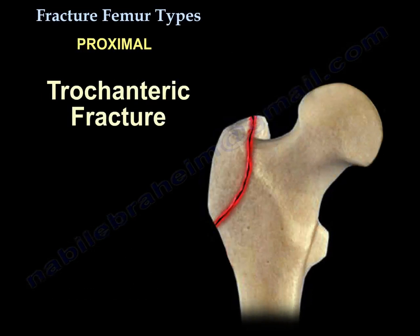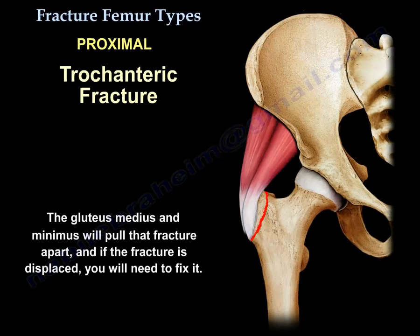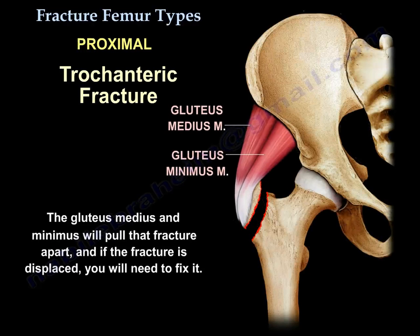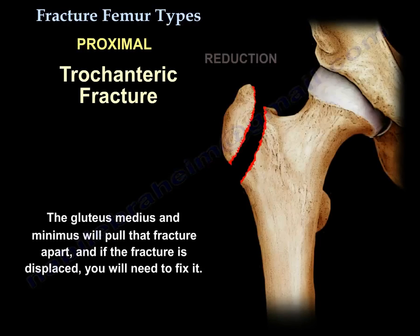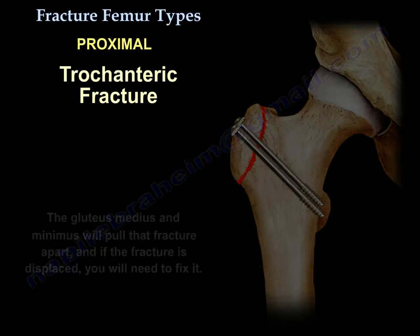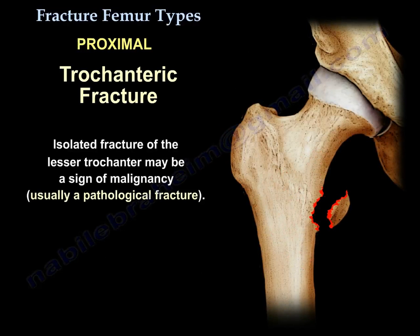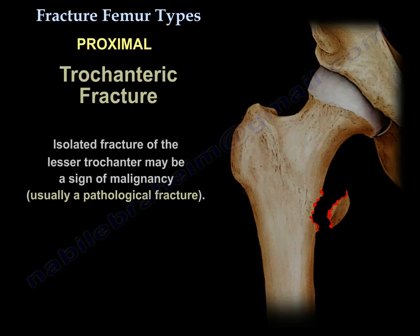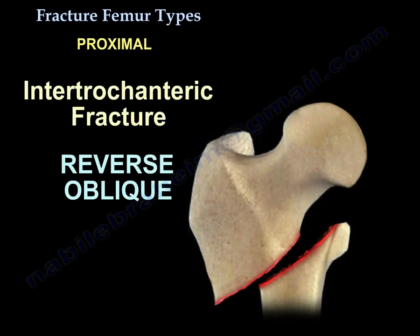You can also have a trochanteric fracture. The gluteus medius and minimus will pull the fracture apart, and if displaced, you need to fix it. An isolated fracture of the lesser trochanter may be a sign of malignancy — it is usually a pathological fracture. In the proximal femur, you can also have an intertrochanteric fracture, which can be an oblique or reverse oblique fracture.